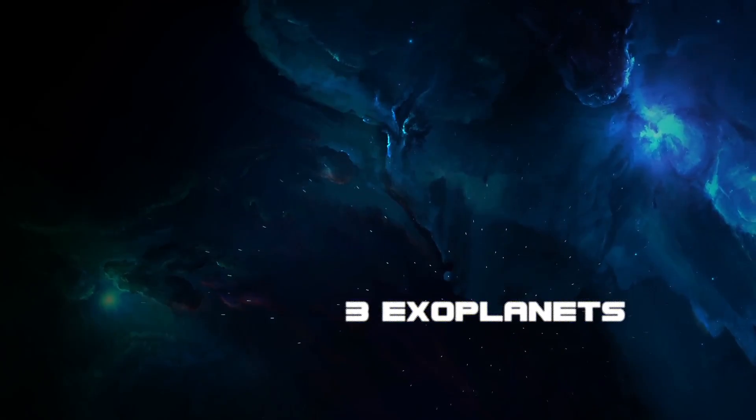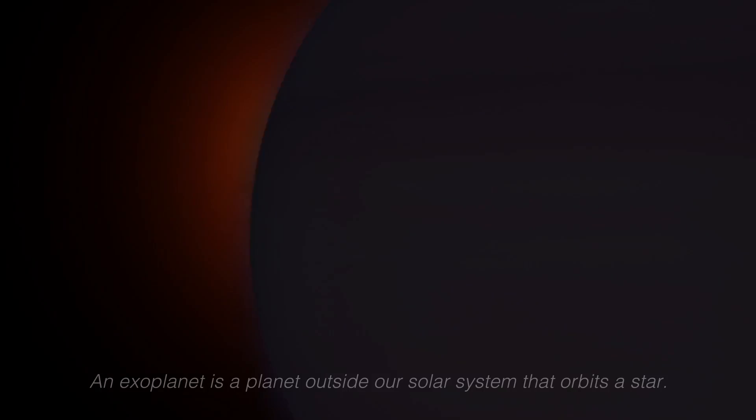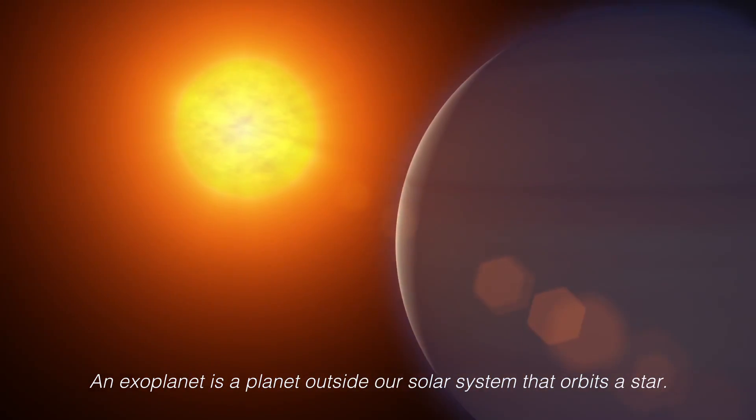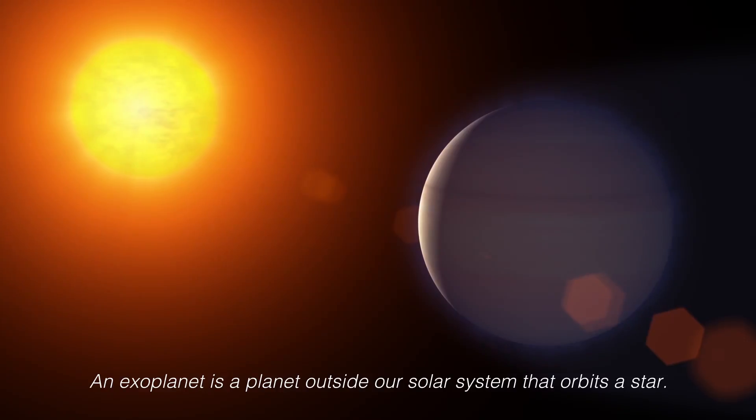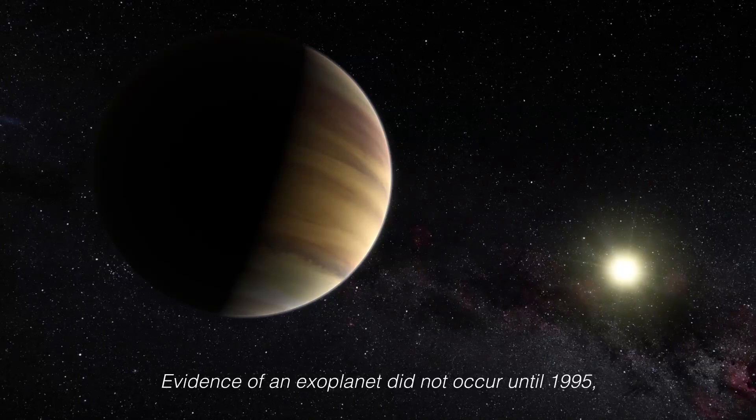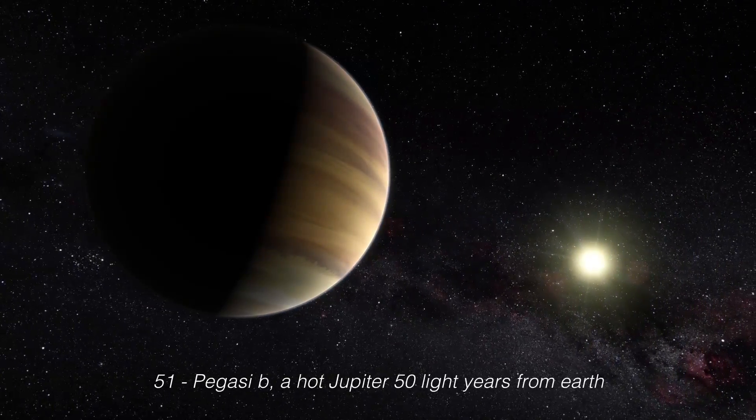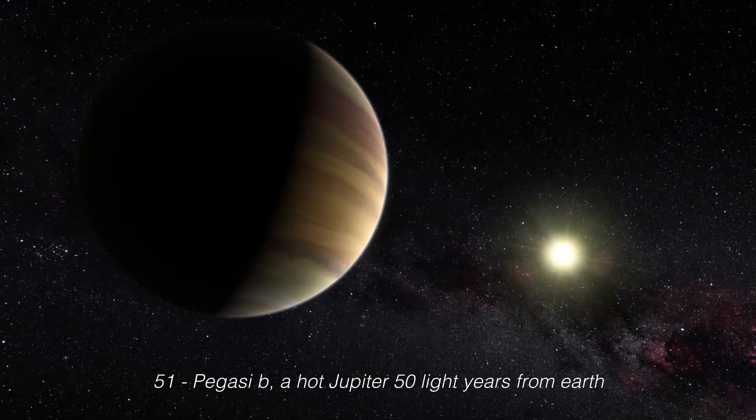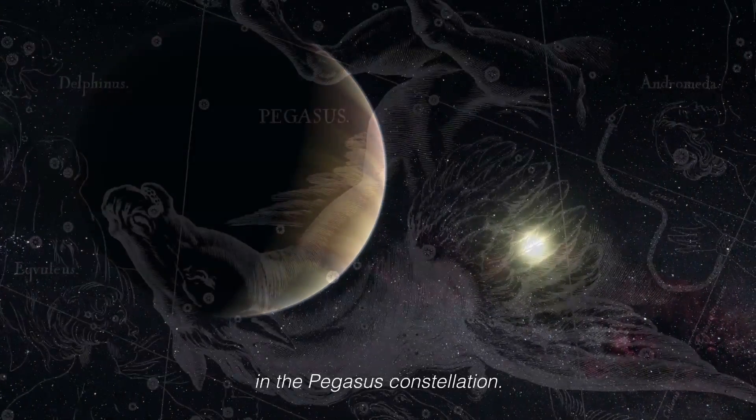Number 3: Exoplanets. An exoplanet is a planet outside our solar system that orbits a star. Evidence of an exoplanet did not occur until 1995: 51 Pegasi b, a hot Jupiter 50 light-years from Earth in the Pegasus constellation.